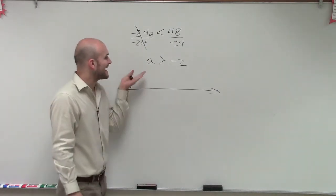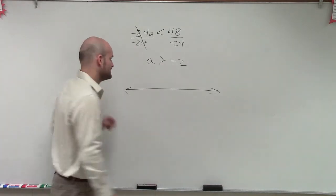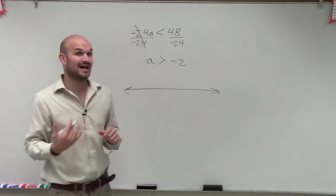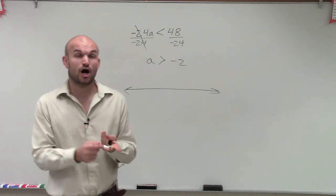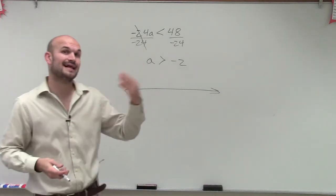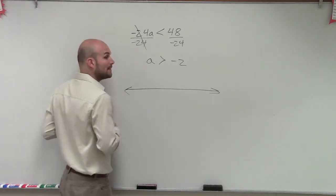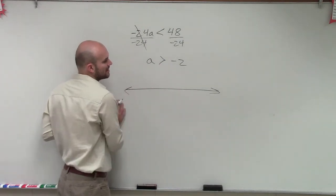But now my solution says a is greater than negative 2. So that means that can represent a lot of different numbers. You could say 0 is greater than negative 2. 100 is greater than negative 2. There's a lot of possibilities now, and we need a way to represent all of them. So we're going to use a line graph.